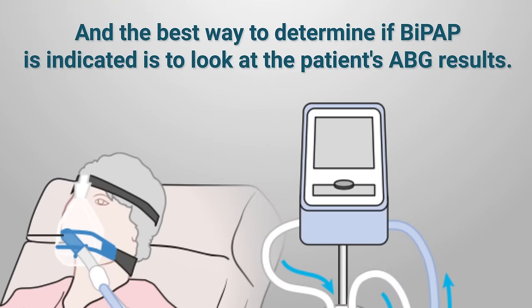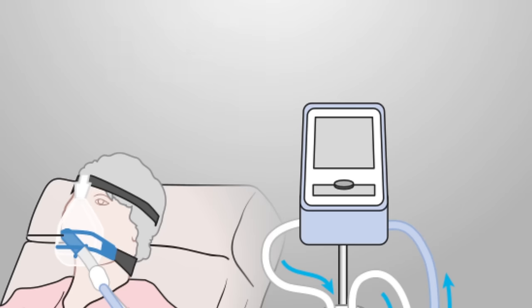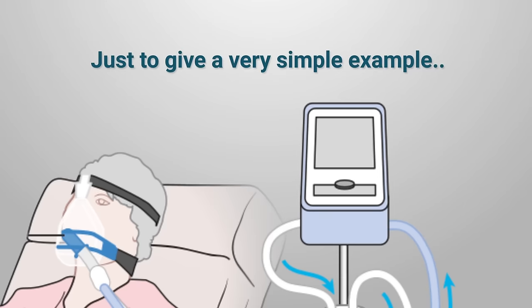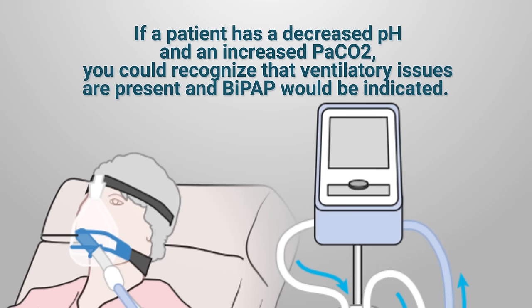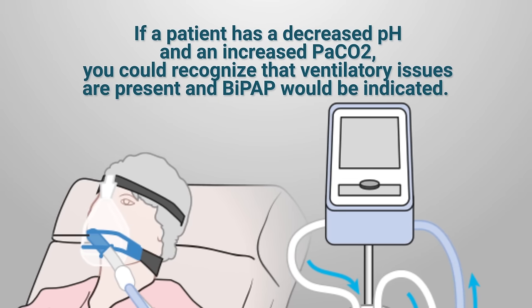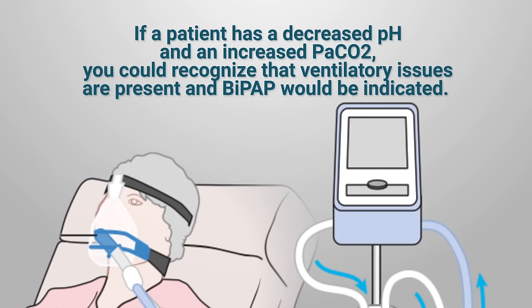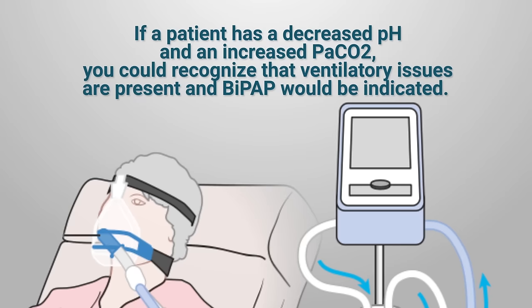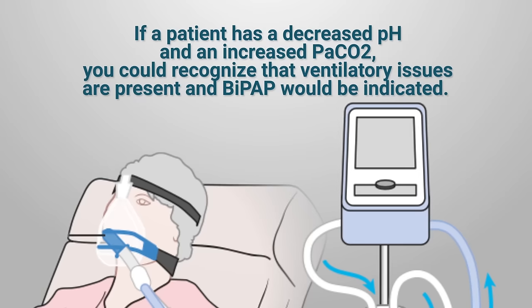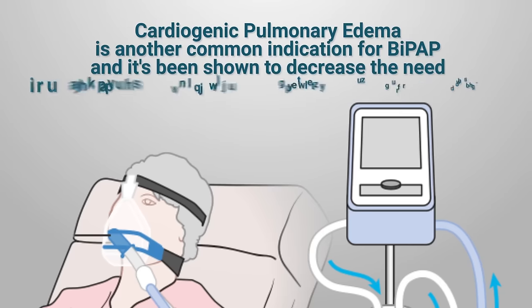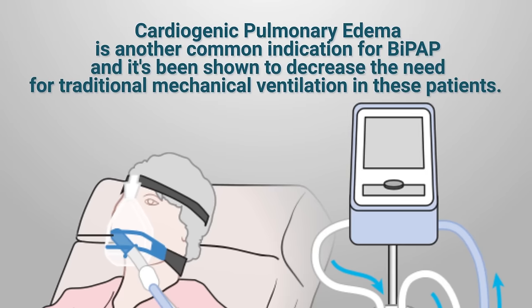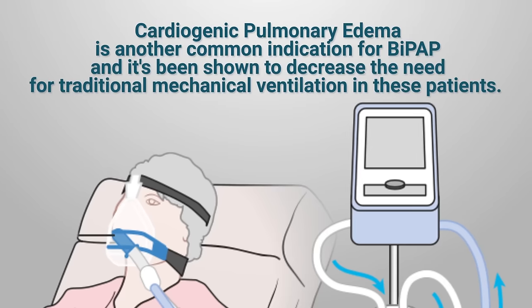The two primary indications for BiPAP are acute respiratory failure and an acute exacerbation of COPD. The best way to determine if BiPAP is indicated is to look at the patient's ABG results. For example, if a patient has a decreased pH and an increased PaCO2, you can recognize that ventilatory issues are present and BiPAP would be indicated.